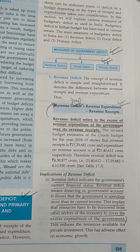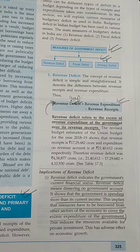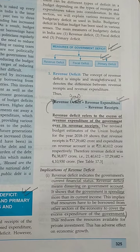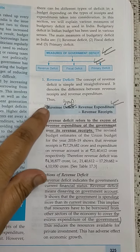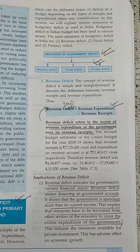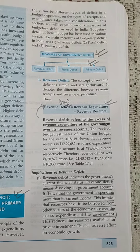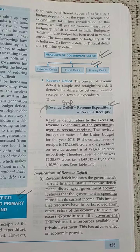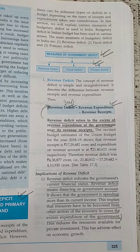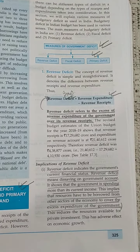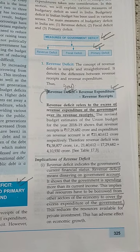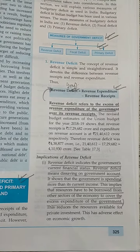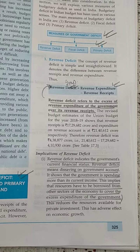Revenue deficit refers to the excess of revenue expenditure over the revenue receipt of the government. In revenue deficit, we are talking about the revenue portion of the government. The formula to be written: revenue deficit is equal to revenue expenditure minus revenue receipt.